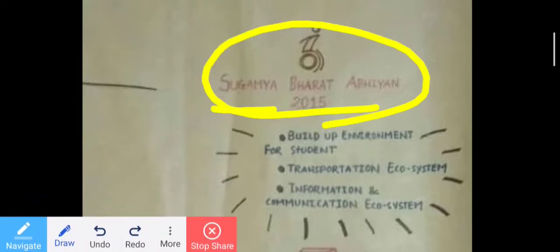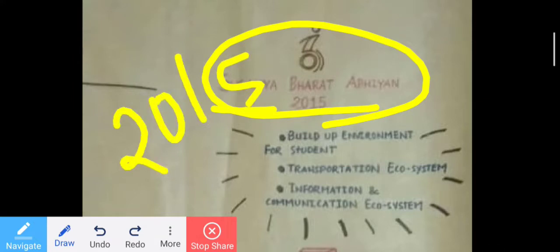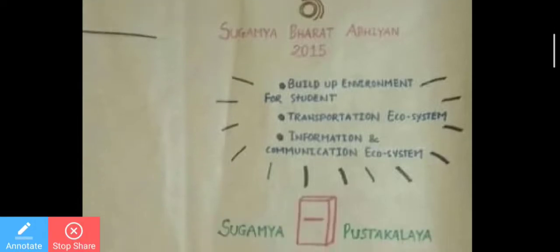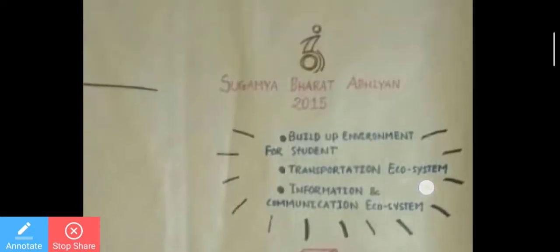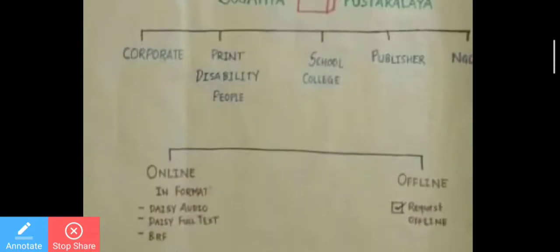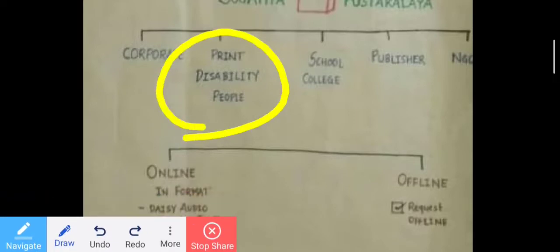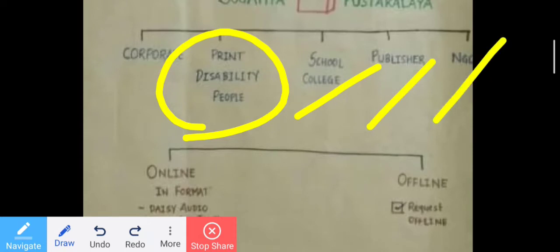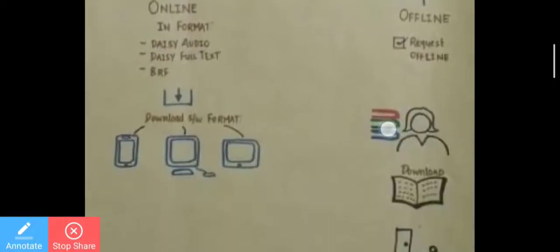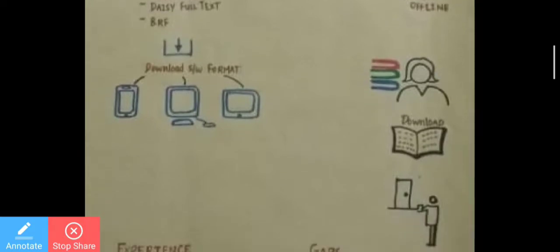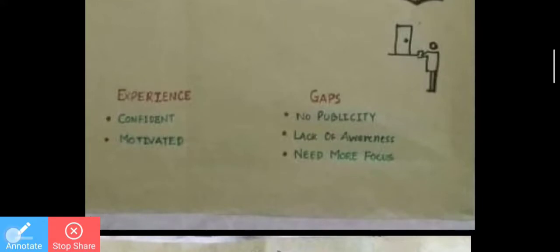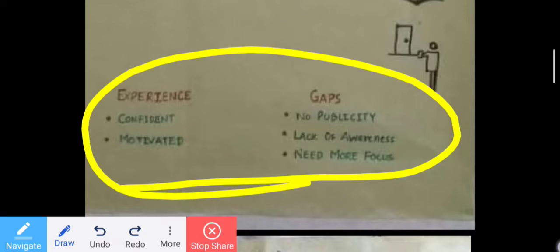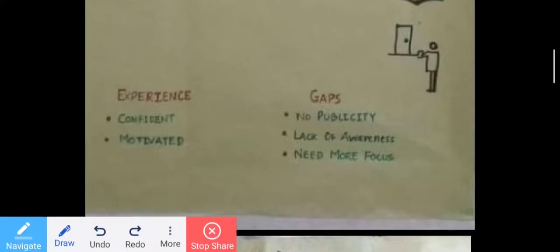Now let me explain Sugamya Bharat Abhiyan, which was in 2015. It was designed to create an accessible, eco-friendly environment for students — covering ecosystem, transportation, information, and communication systems. Libraries are made available for disabled children, school colleges, publishers, NGOs, and corporates. It provides downloadable resources available online.